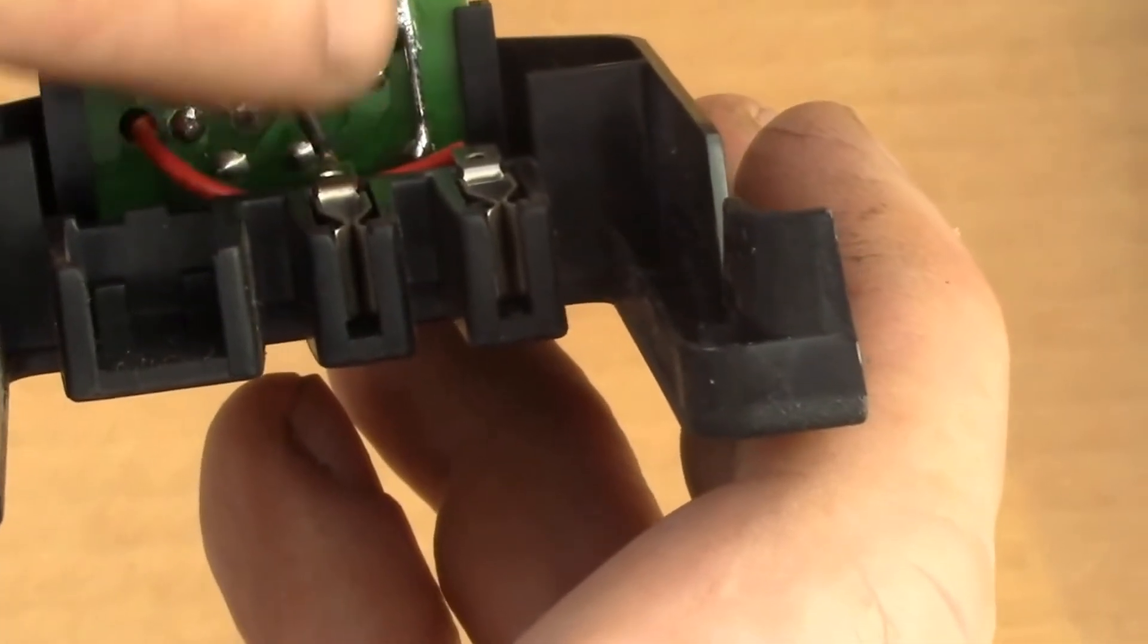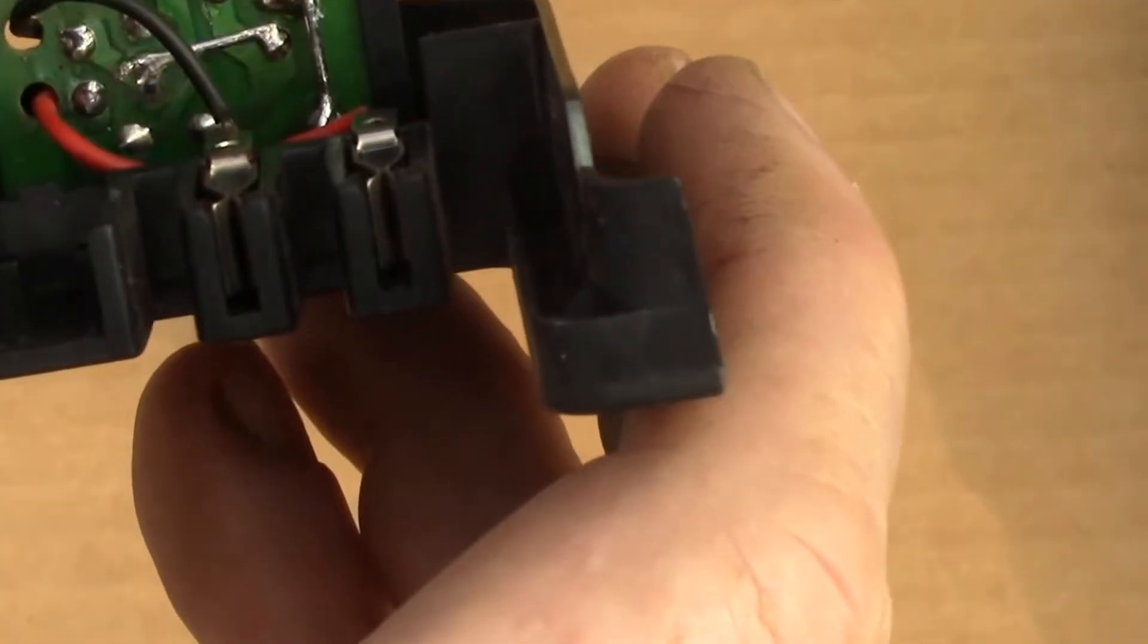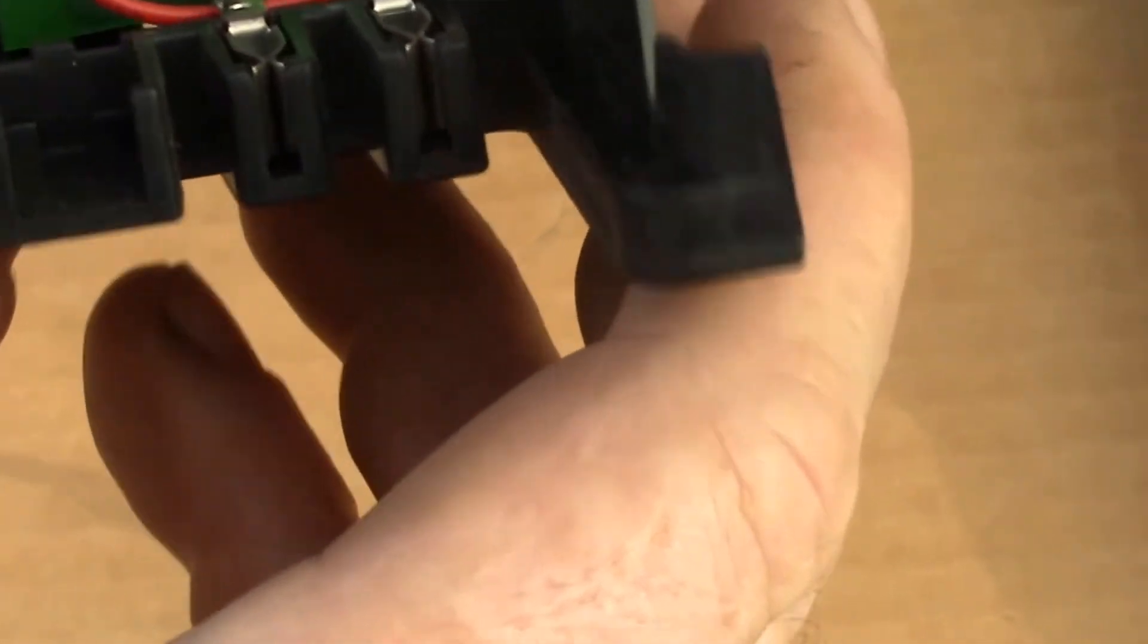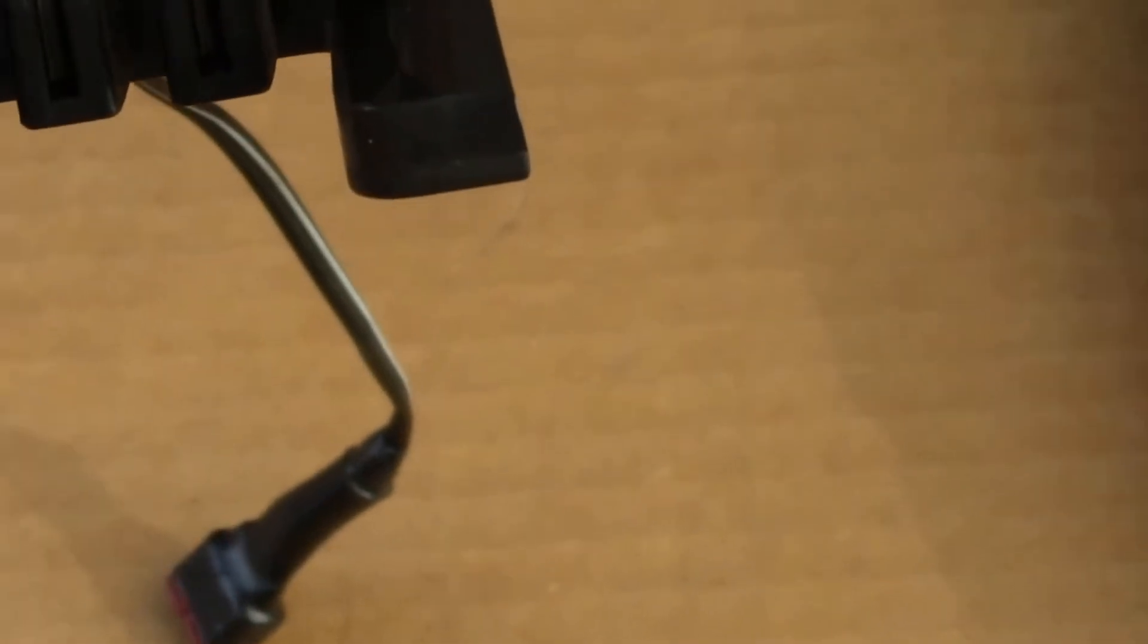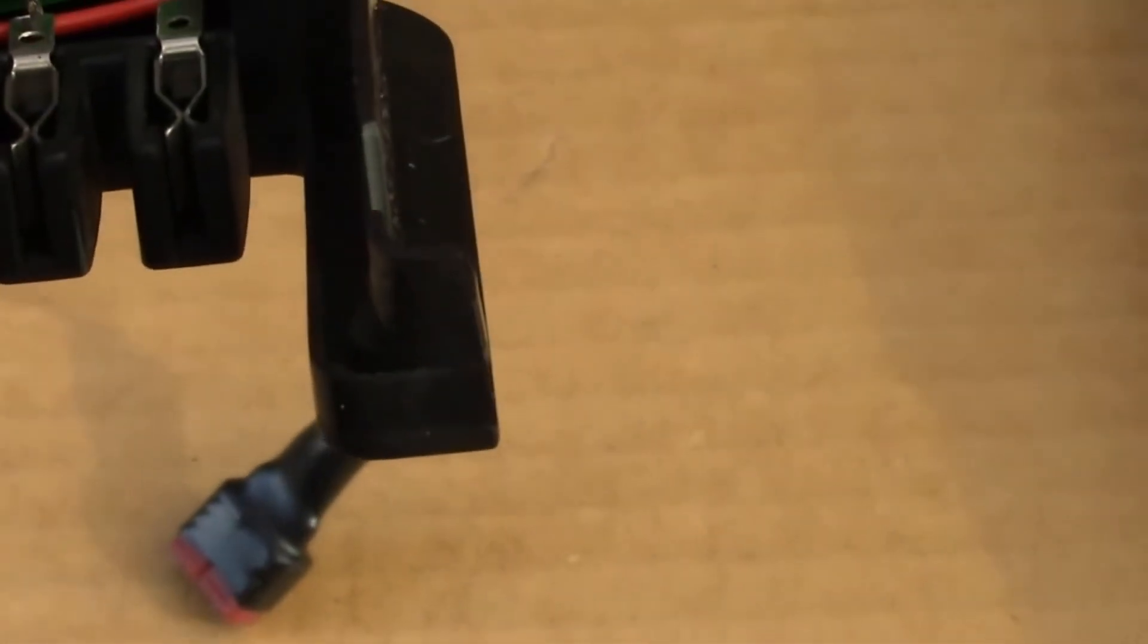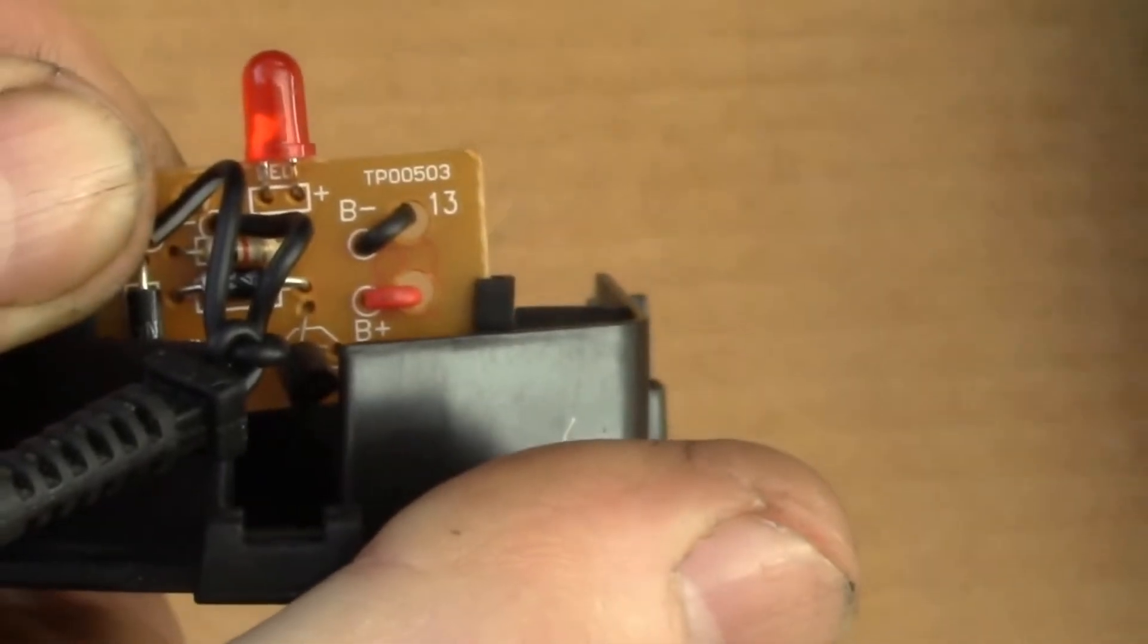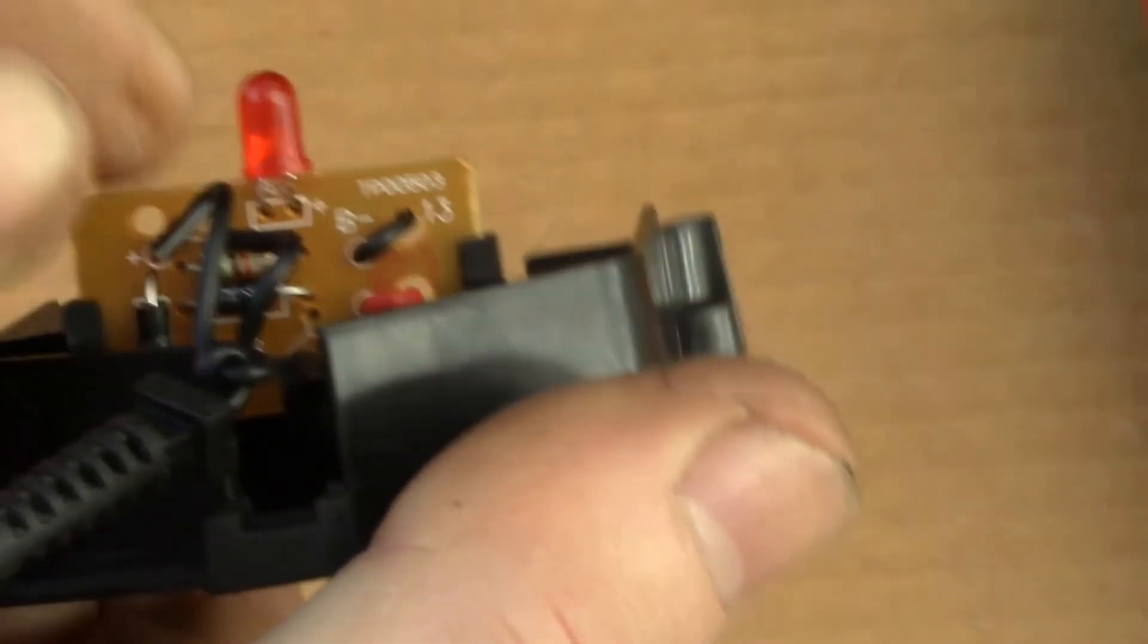There's the positive diode, and you can see it just goes - positive comes in, goes down, runs across and connects to the red wire. Likewise, the negative comes in here, runs across and connects to the black wire, which is the red and black battery minus and plus connected down there.